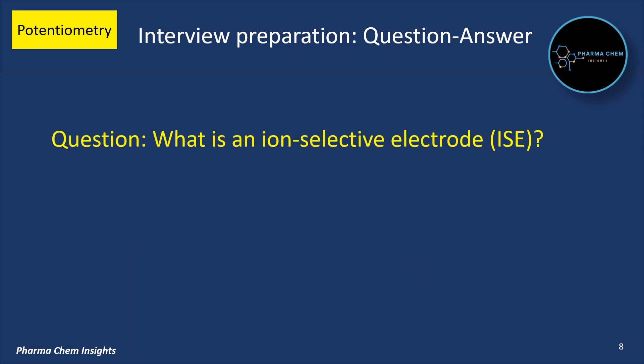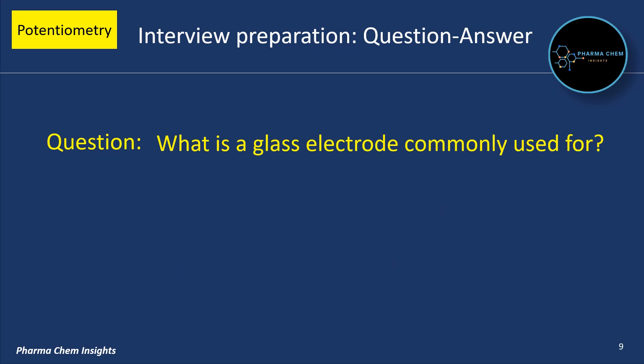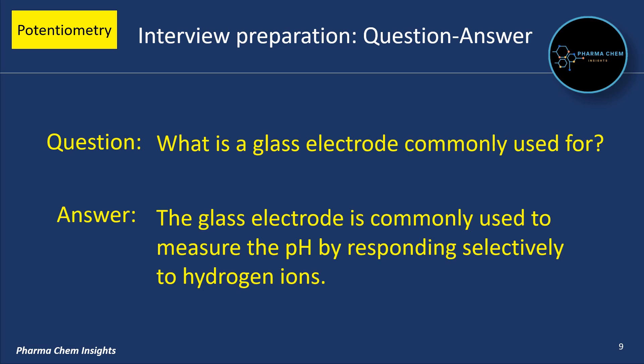What is an ion selective electrode? An ion selective electrode is an electrode designed to selectively measure a specific ion in the presence of other ions. What is a glass electrode commonly used for? A glass electrode is used for measuring pH by responding selectively to hydrogen ions.